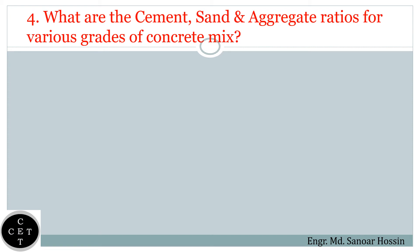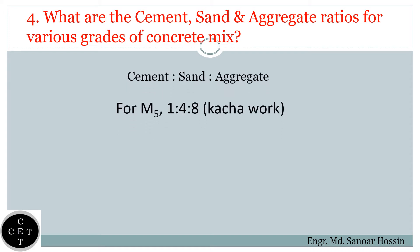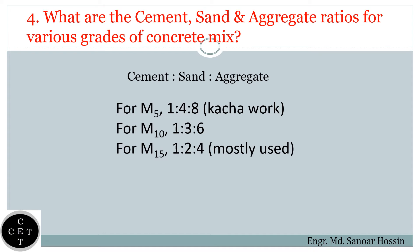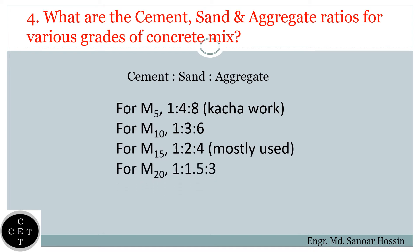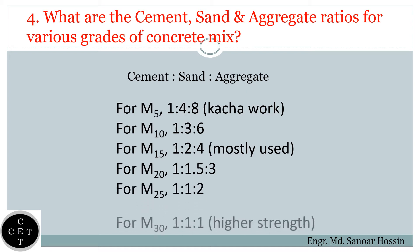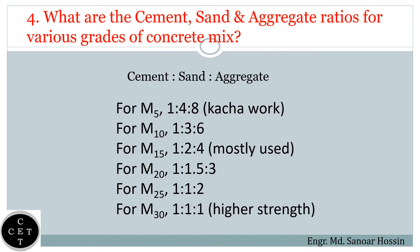Question number four: What are the cement, sand and aggregate ratios for various grades of concrete mix? M5: 1:4:8, M10: 1:3:6, M15: 1:2:4, M20: 1:1.5:3, M25: 1:1:2, M30: 1:1:1.